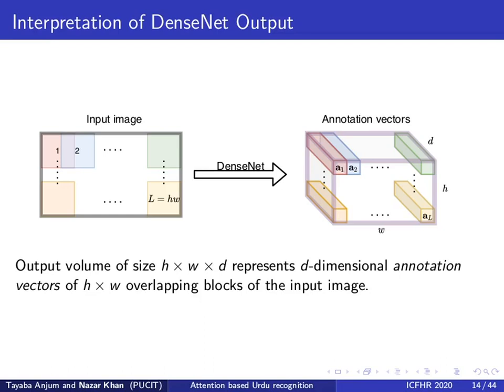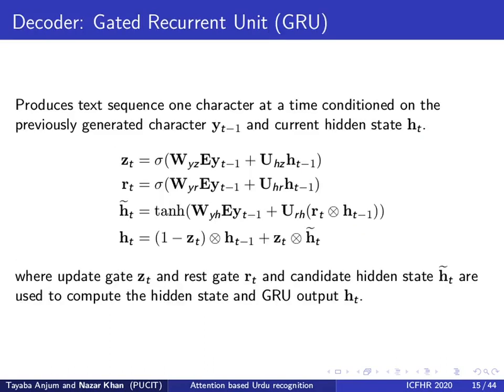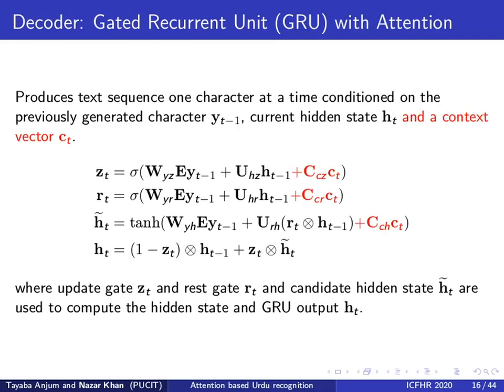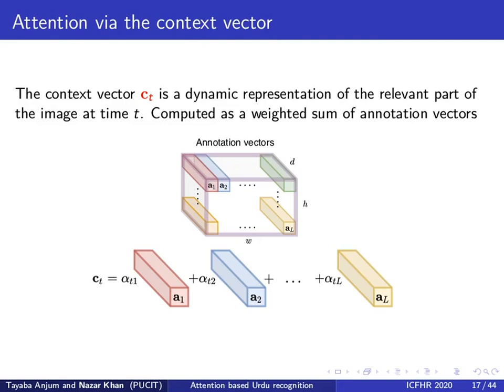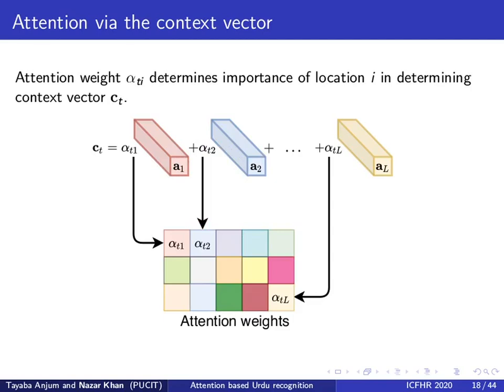Now we can choose to focus on particular image regions during the decoding phase. One of the standard decoders for sequential data is the gated recurrent unit, which produces a text sequence one character at a time, conditioned on the previously generated character y_{t-1} and the current hidden state h_t. The attention mechanism can be incorporated in a GRU through a context vector — a dynamic representation of the relevant part of the image at time t. It is computed as a weighted sum of the annotation vectors, where the attention weights α_{t,i} determine the importance of each image region at time t.